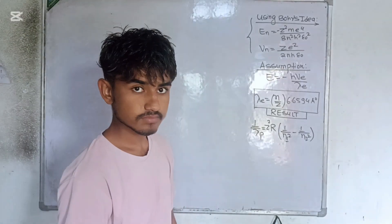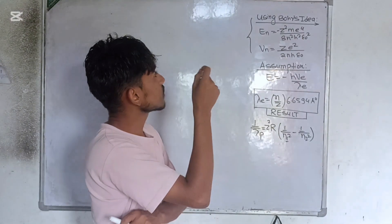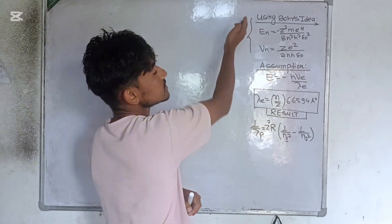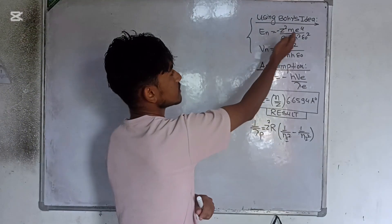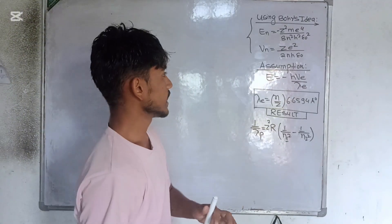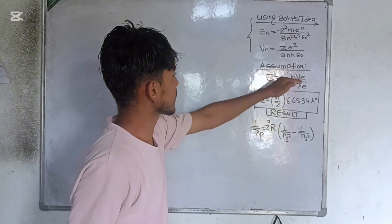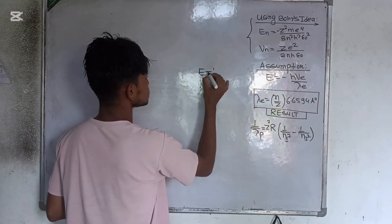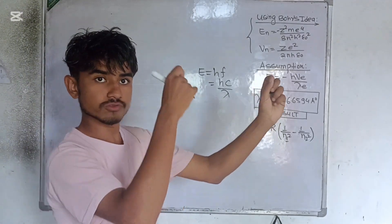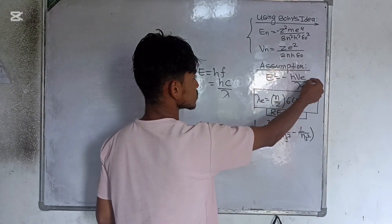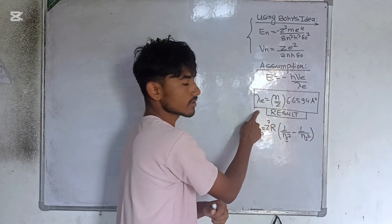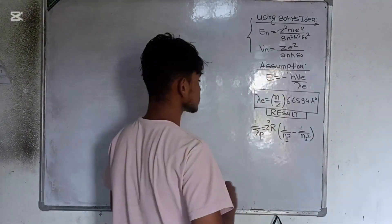Let us dive into the whiteboard. To evaluate the wavelength of an electron with quantized energy, I am using Bohr's idea. The energy of the nth orbit relation and the velocity of the corresponding nth orbit are my starting points. My assumption is that the electron follows Planck's radiation law: E = hf = hc/λ. This is true for a photon, but I am also assuming this equation holds for an electron with velocity v_e and wavelength λ_e.